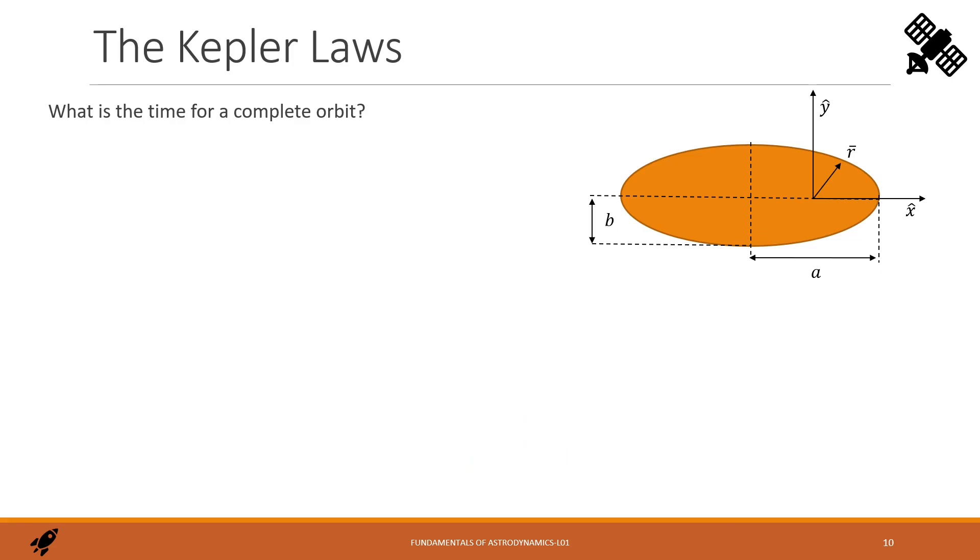Since the orbit is a conic, it can be an ellipse, a parabola or a hyperbola. Assuming to deal with an ellipse, the only closed path, what is the time for a complete orbit? The area of the ellipse is pi times a times b, where b, the minor semi-axis, we can express as function of a and e. And finally, we get such a formula.